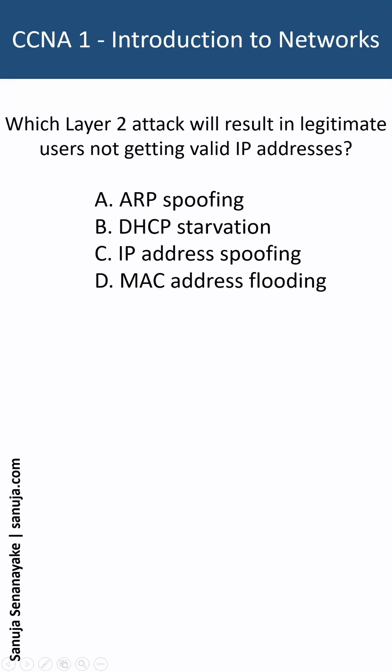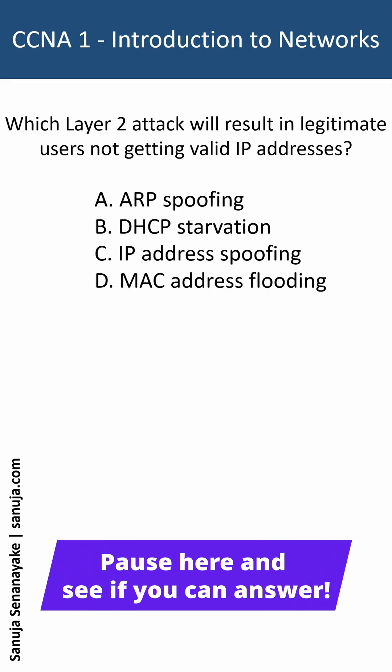Which Layer 2 attack will result in legitimate users not getting valid IP addresses? ARP spoofing, DHCP starvation, IP MAC address spoofing, or MAC address flooding?